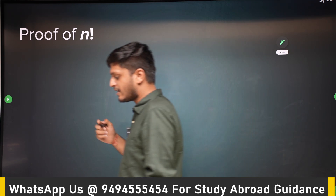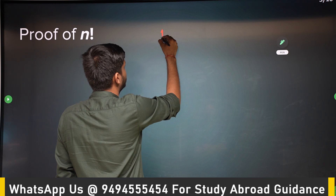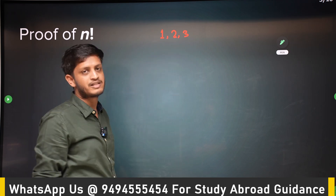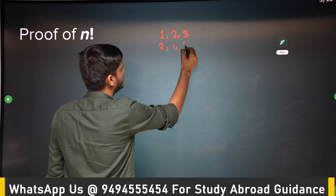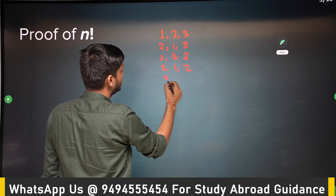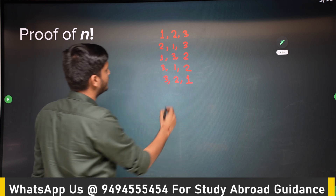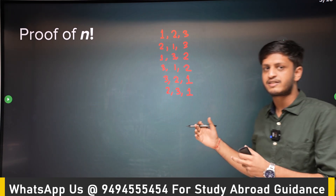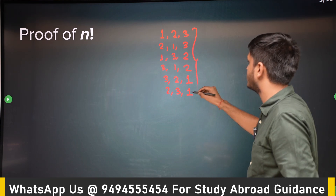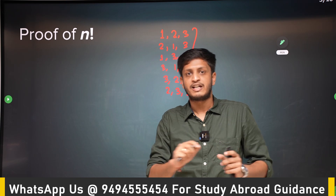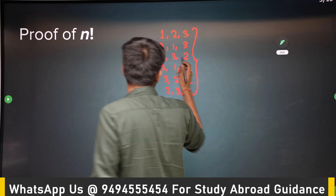n factorial is the number of all possible ways in which we can arrange n elements. For example, with three elements 1, 2, 3, the possible arrangements are: 1 2 3, 2 1 3, 1 3 2, 3 1 2, 3 2 1, and 2 3 1. Those are six possible ways to arrange three numbers. So how did the formula for n factorial come about?